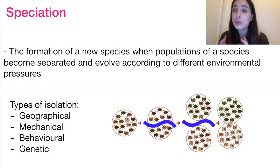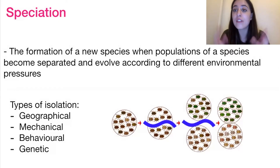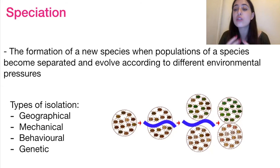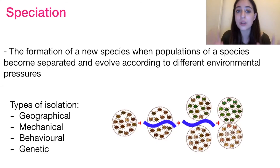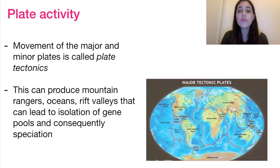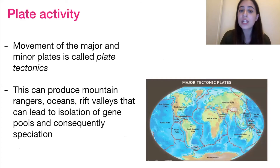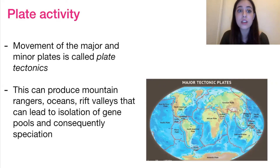The second process bringing about biodiversity is speciation — the formation of a new species when populations of a single species get separated in some way. They evolve to different environmental demands, and if reintroduced, they are so genetically different they're no longer able to reproduce and have separated into two separate species. Types of isolation include geographical, mechanical, behavioral, and genetic. Geographical isolation can be caused by plate tectonic activity, creating mountain ranges and rift valleys that isolate gene pools and cause speciation.